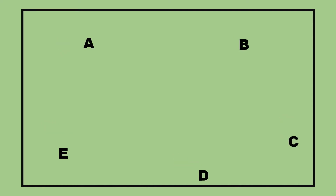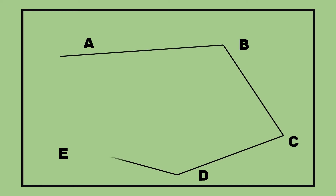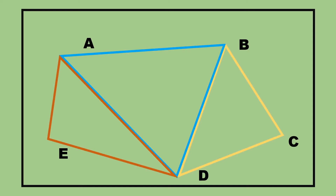Step 2: The chief of party divides the polygon into 3 triangles, taking into consideration that the divisions should be easily measured. Name the triangles as A1, A2, and A3.